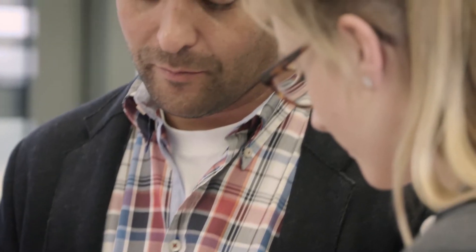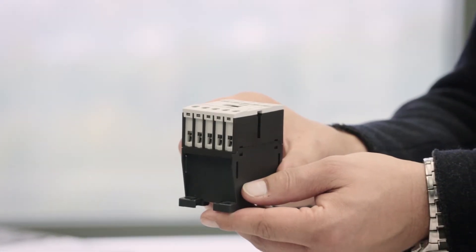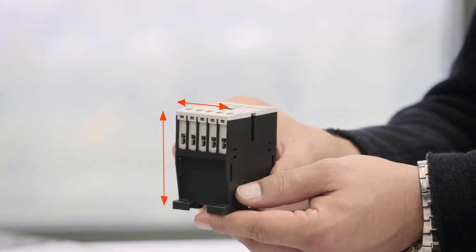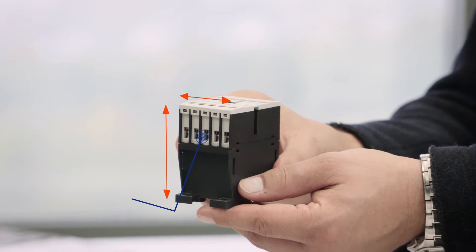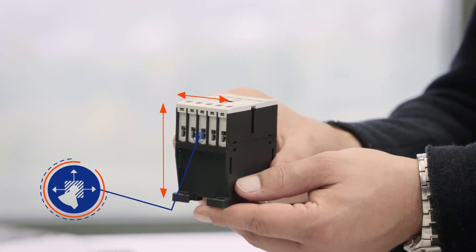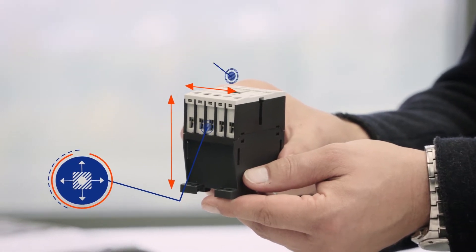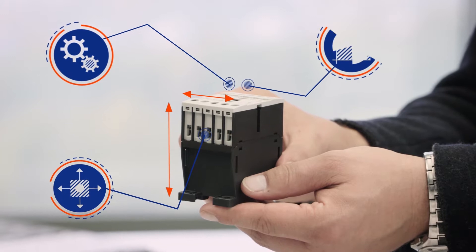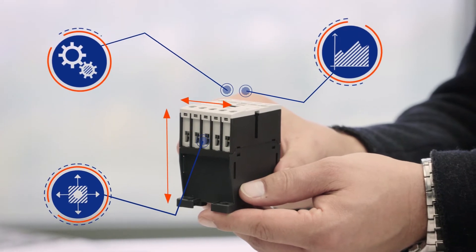Take for example a simple power contactor. The complexity and depth of information needed is obvious. The planner needs to know the product dimensions, the positions of the terminals, the different functions, the performance data and much much more.